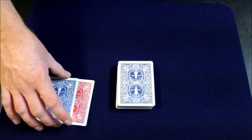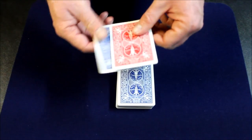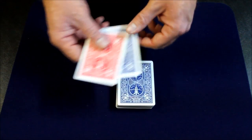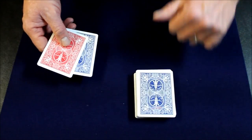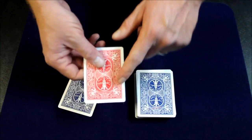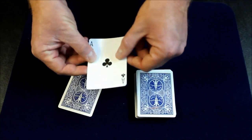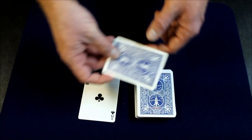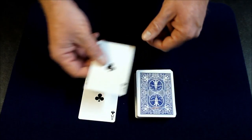Okay so now for the tutorial. So this is a Chicago opener but some people also refer to it as Red Hot Mama. So all you need for this is you have your blue back deck. You're gonna take a red card. Any red card you like. In this case I have the Ace of Clubs. So we're gonna take the corresponding blue Ace of Clubs out of the deck.